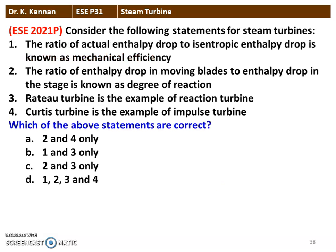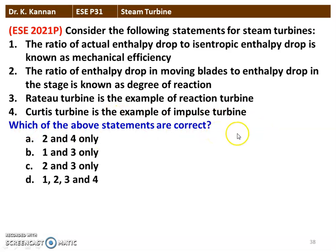Next question from the 2021 question paper — consider the following statements for steam turbines. Statement 1: the ratio of actual enthalpy drop to the isentropic enthalpy drop is known as mechanical efficiency — that is wrong. Statement 2: the ratio of enthalpy drop in moving blade to the enthalpy drop in the stage is known as degree of reaction — this is correct. Statement 3: Rateau turbine is an example of a reaction turbine — that is also wrong. Rateau turbine is a pressure compounded turbine and is an example of an impulse turbine. So statements 2 and 4 are correct — option A.